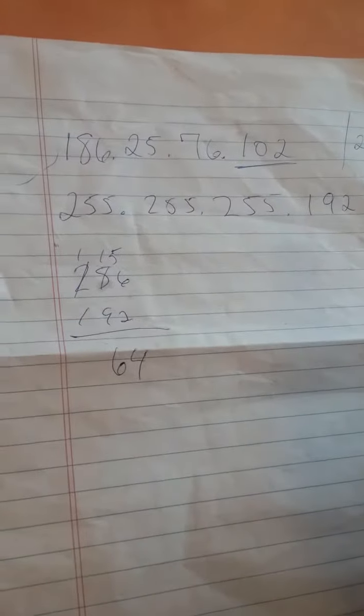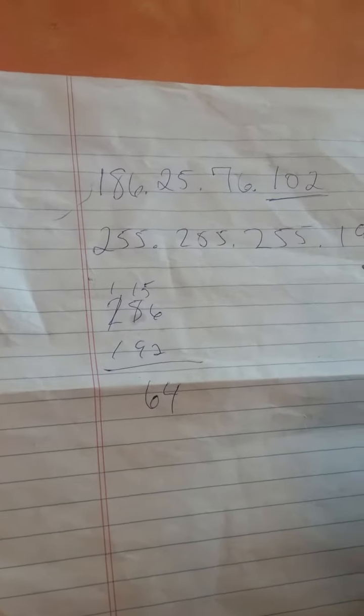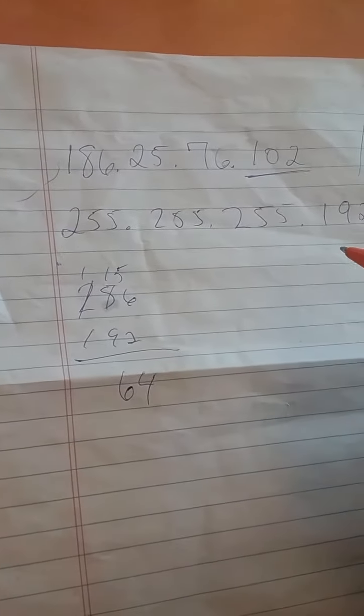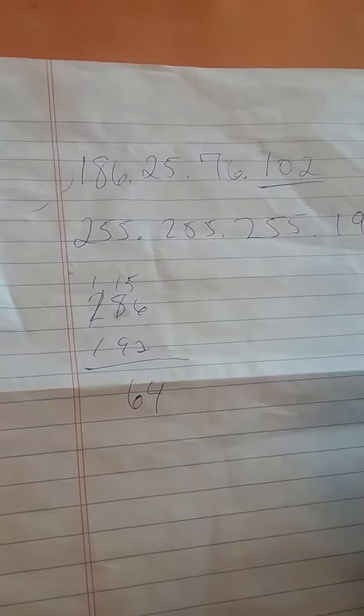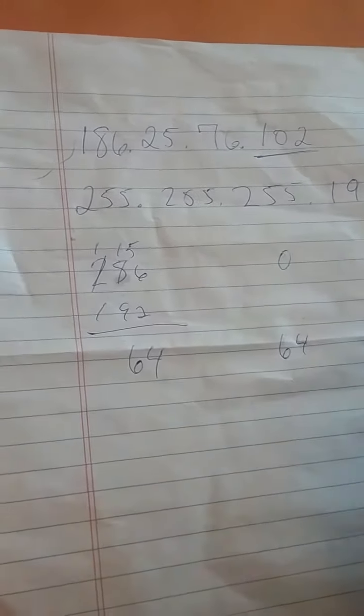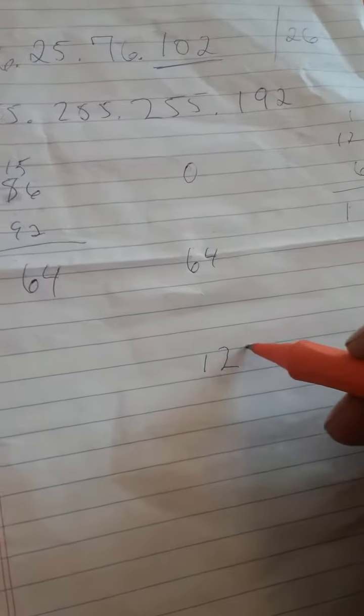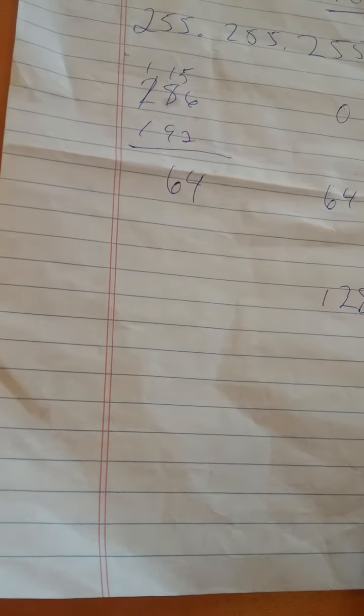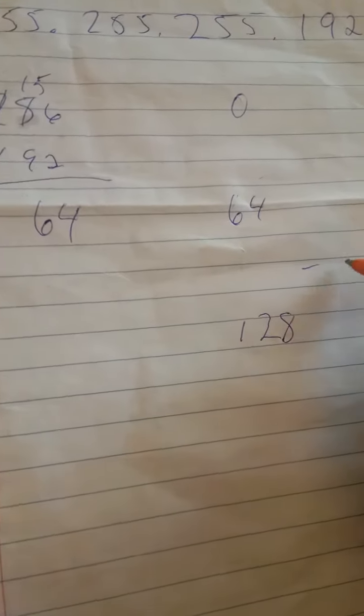So you look at the interesting octet, and the interesting octet is the 102. So 0 to 64 will be one block, 64 to 128 will be another block. So the 102 falls in between here.